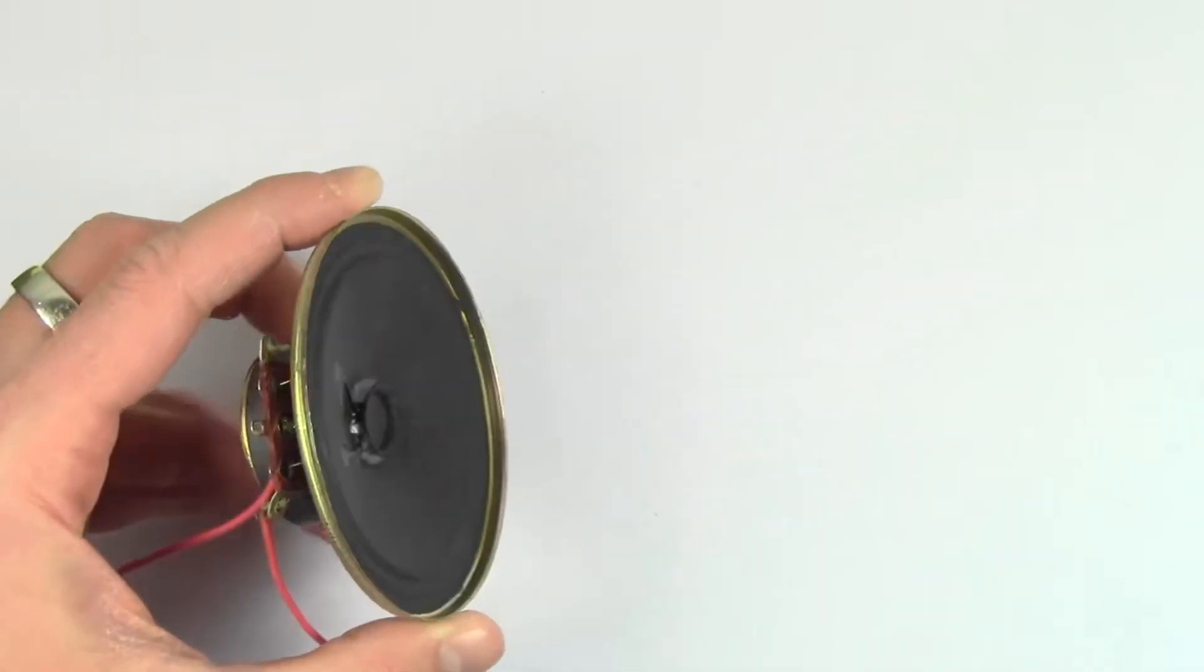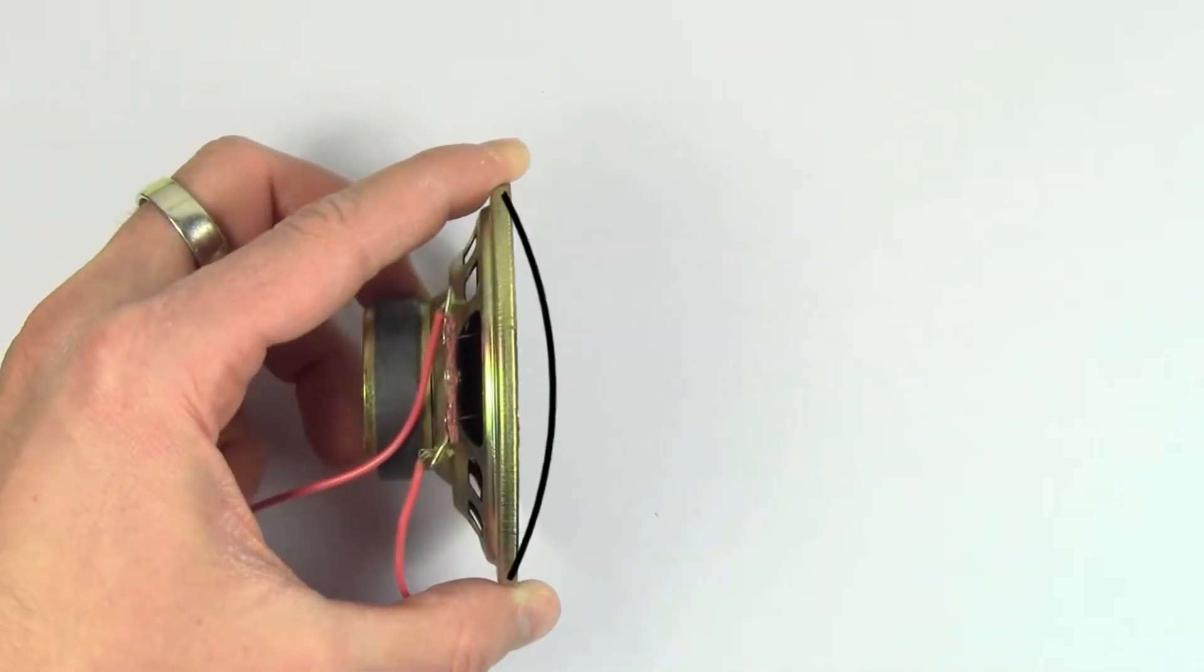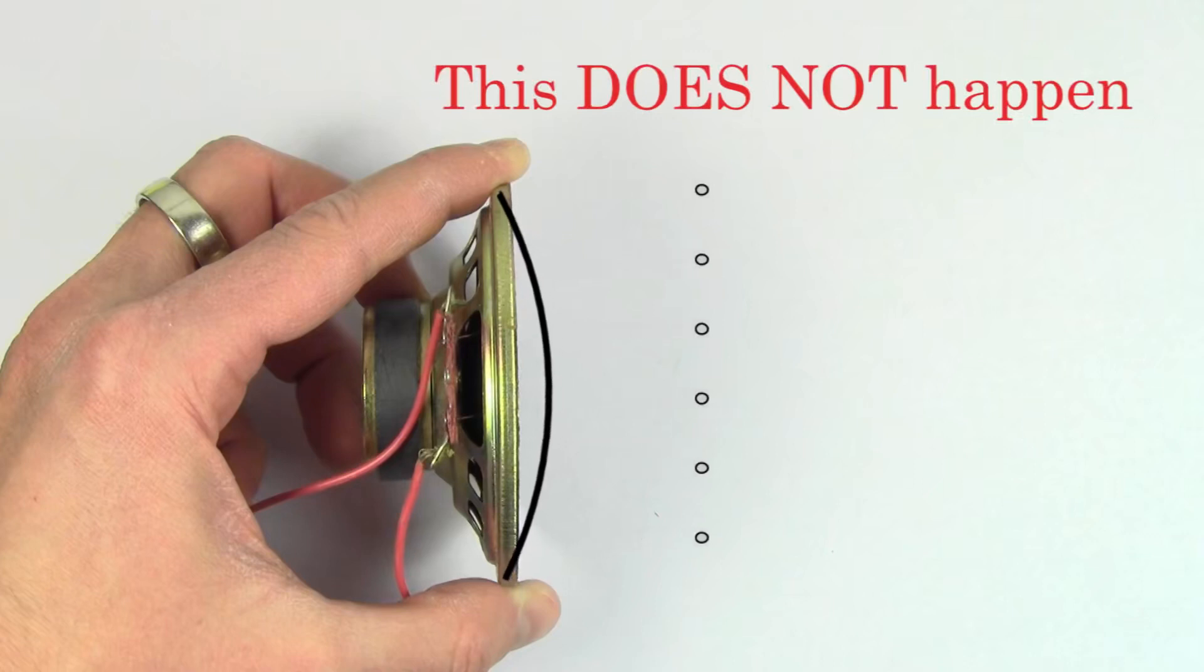The oscillation of the diaphragm will also cause the air in front of the diaphragm to move back and forth. But here's the interesting thing. The air in front of the diaphragm doesn't actually travel away from the speaker. The air molecules in front of the speaker just oscillate back and forth.